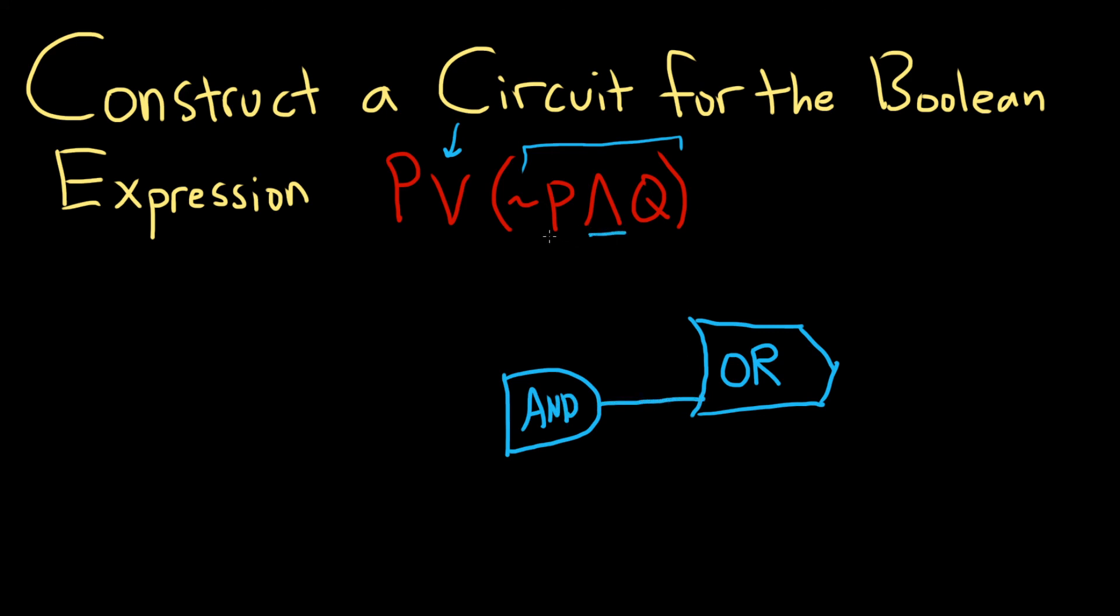This AND gate has two inputs, NOT P and Q. So Q we can always draw later. But in order to get NOT P, we need a NOT gate. So I'm going to go ahead and put a NOT gate here. Working right to left. So that's NOT.